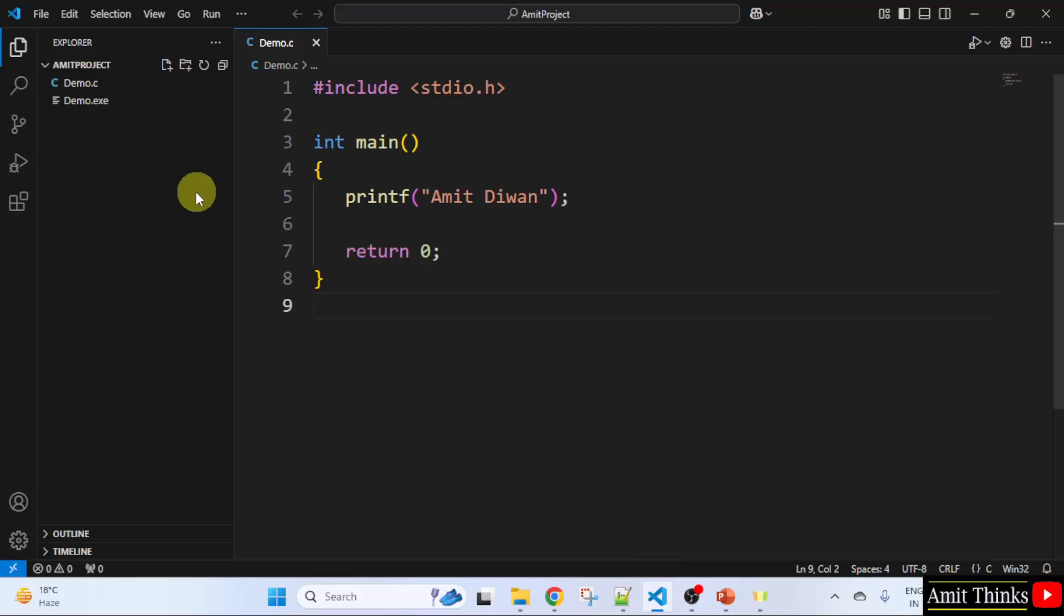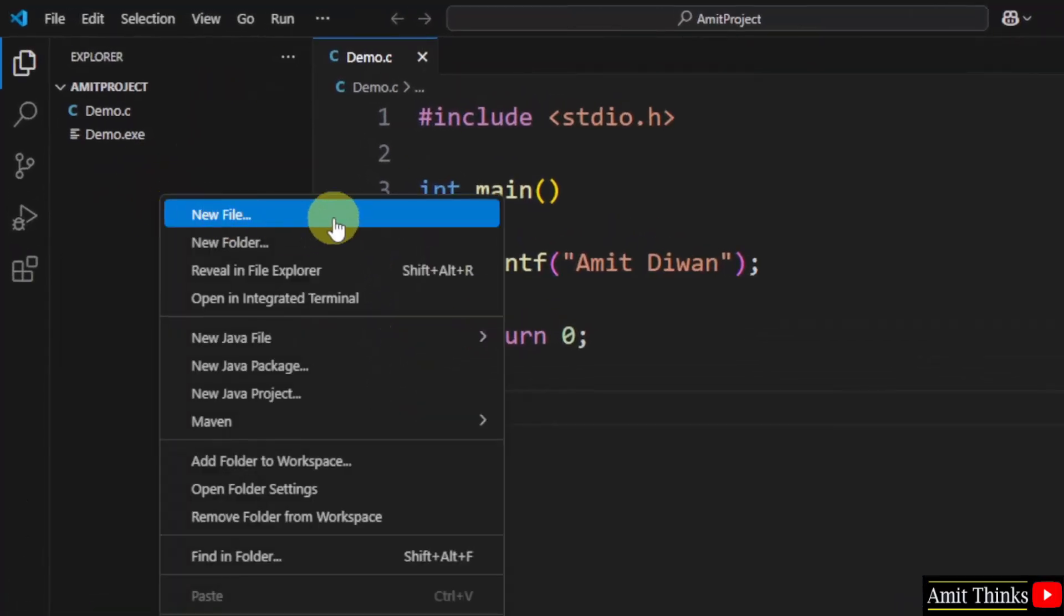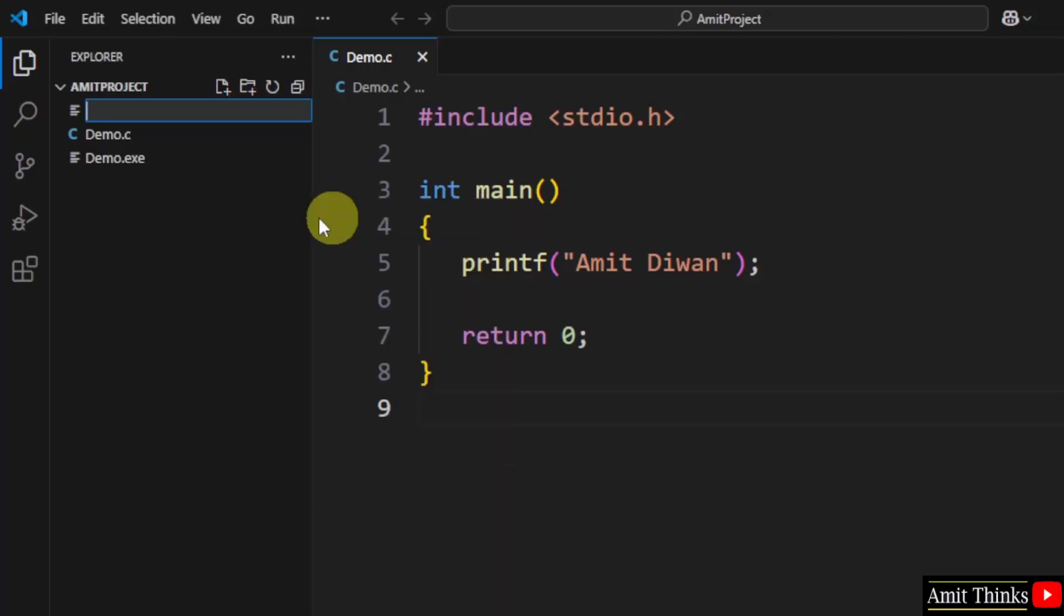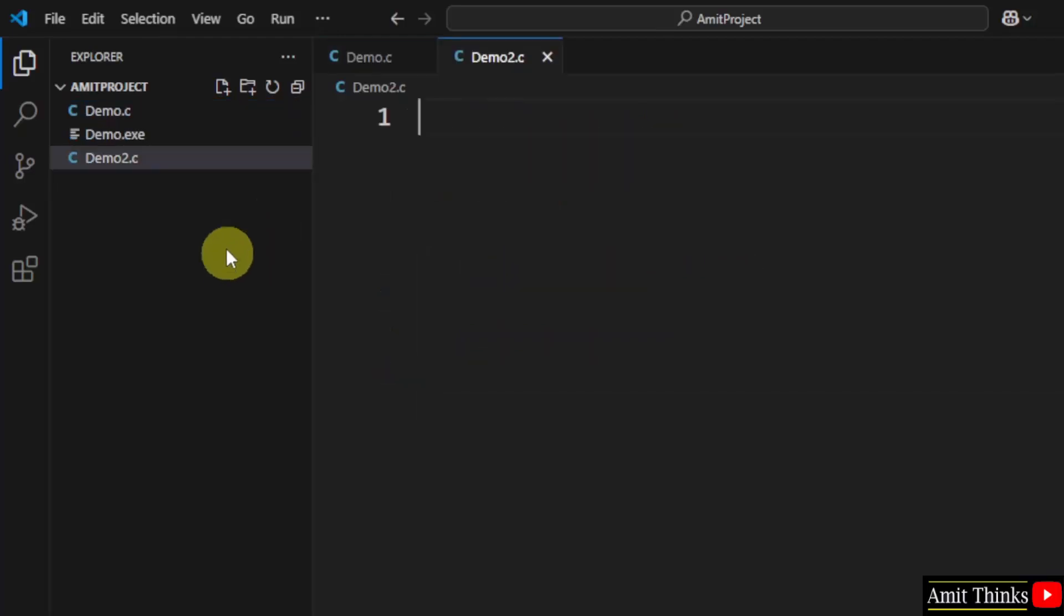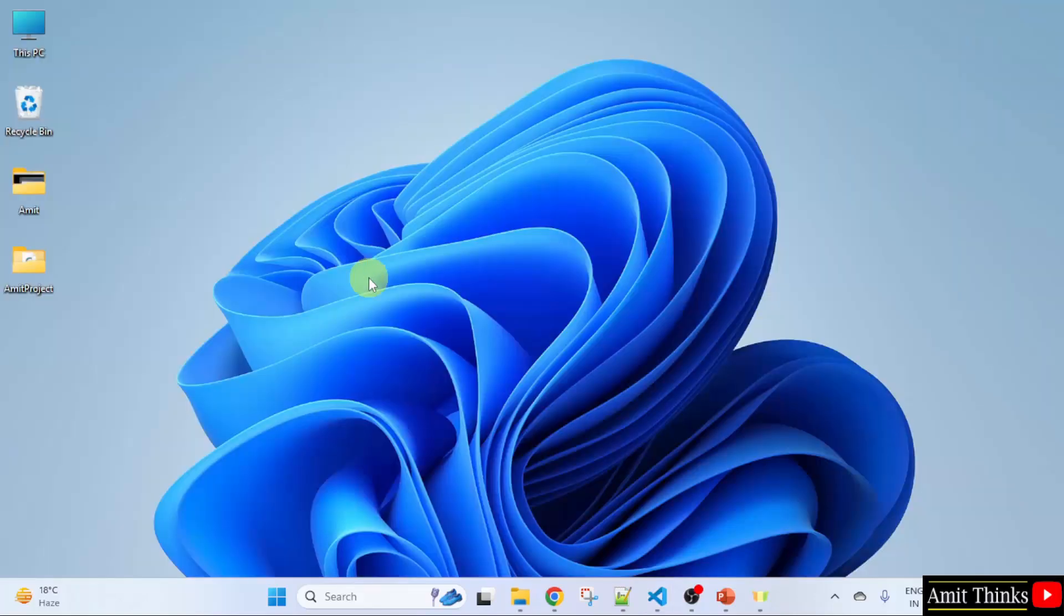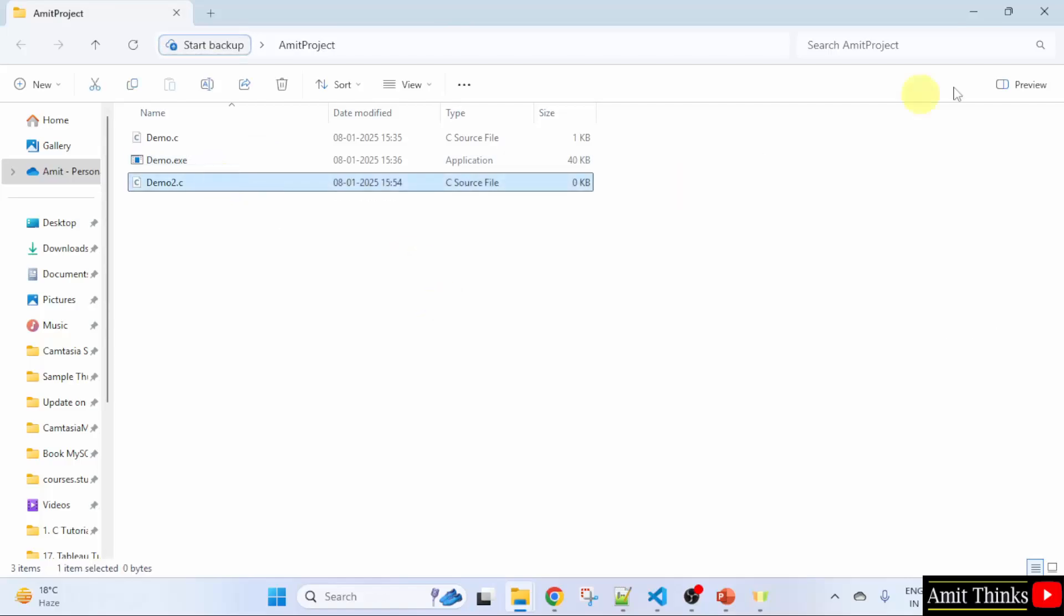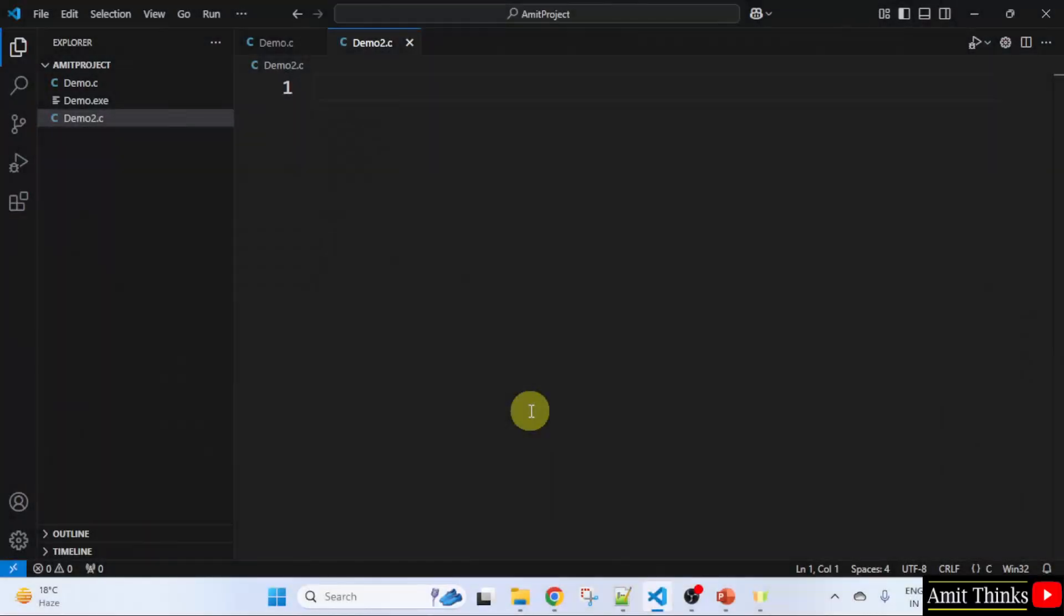This was our VS Code. Let us right-click here and click new file to create a new C file. I will name this demo2.c. Here it is demo2.c, and I hope you remember the location. It was on the desktop, Ambit Project. Here it is demo2 now.